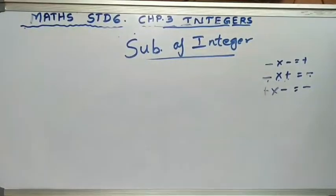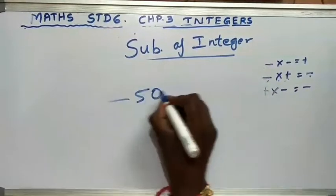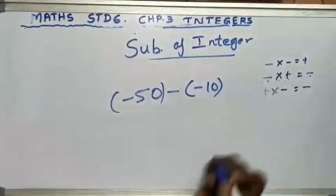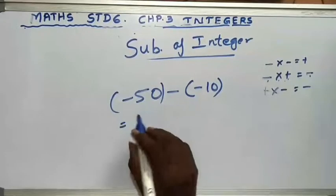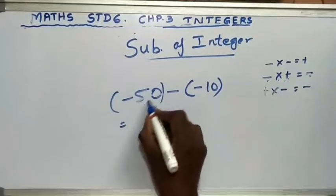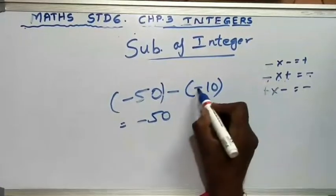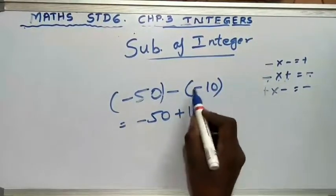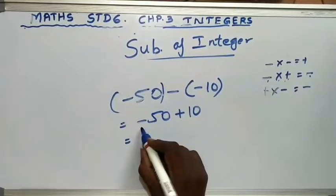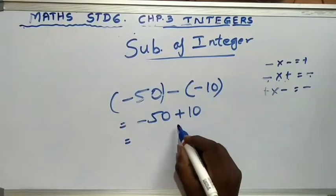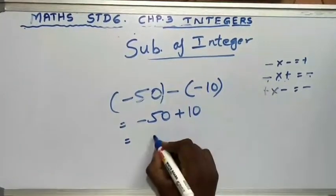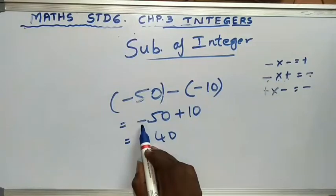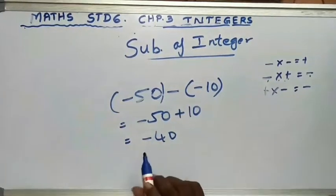Let me do one more example with a bigger number: minus 50 minus (minus 10). Open the bracket: minus into minus is plus, so write minus 50 plus 10. Left side minus, right side plus — so minus into plus is minus, meaning subtract. 50 minus 10 is 40. Which number is greater? 50. And 50 has a minus sign, so the answer is minus 40.